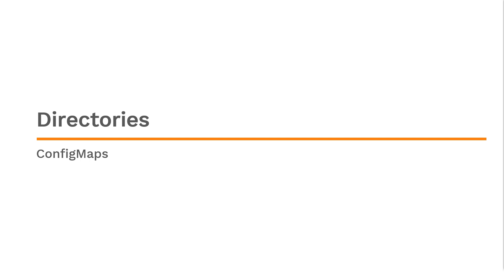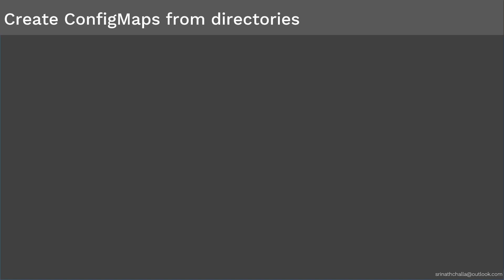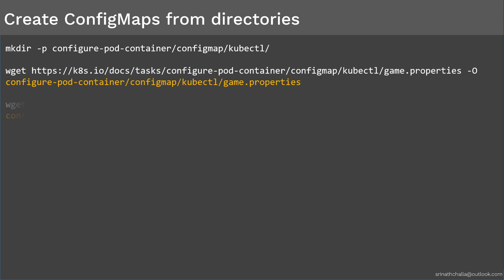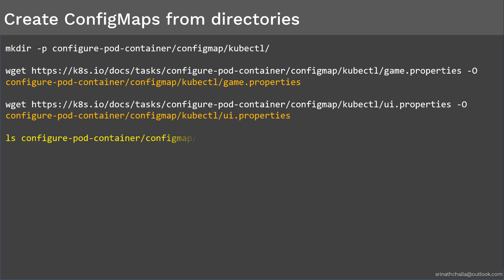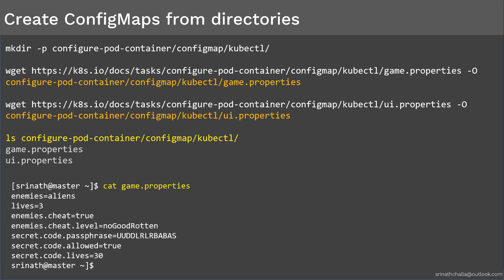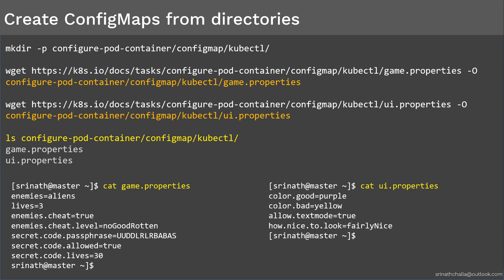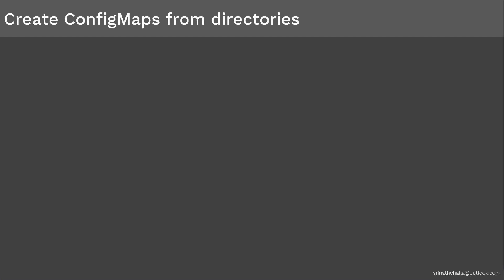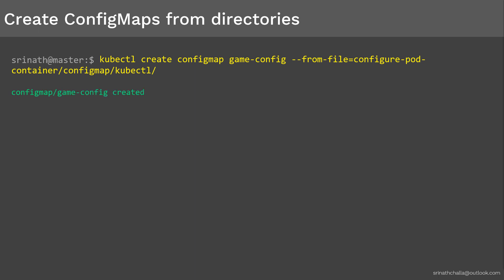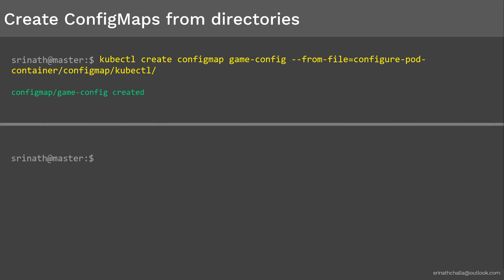First, let's create the directory where we store these files. Then we'll copy those two files into the directory using the wget command. As you can see, we have successfully downloaded those two files into our directory. Now, let's cat these two files to display their contents. From the output, you can see all these files have key-value pair data. Now, let's create the ConfigMap by combining these two files inside the directory. We use the kubectl create configmap command, and the name of this ConfigMap is gameConfig. Since all the files are inside the directory, we use the --from-file option followed by the directory path. From the output, it is confirmed that the ConfigMap was successfully created.